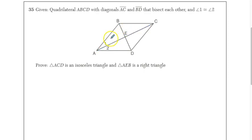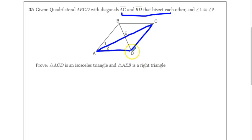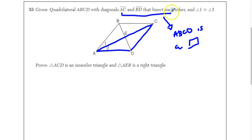We're going to start with the isosceles triangle proof. To prove that this is isosceles, here's how we're going to do this. One of our givens is that AC and BD bisect each other — those are your diagonals. If we know that the diagonals bisect each other, this actually tells us that ABCD is a parallelogram. It's indirectly telling us that it's a parallelogram.